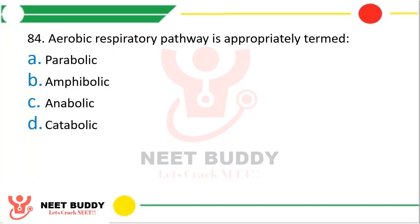Question 84. The aerobic respiratory pathway is appropriately termed as: parabolic, amphibolic, anabolic, or catabolic? The correct answer is option B — amphibolic pathway.